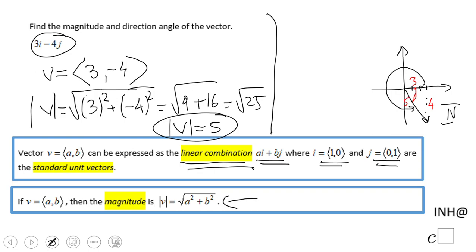We have choices here: we can use sine, cosine, or tangent. Let's say you want to use tangent. Tangent of x will be opposite, which is 4, over 3. In order to find x, we're going to use the inverse function.